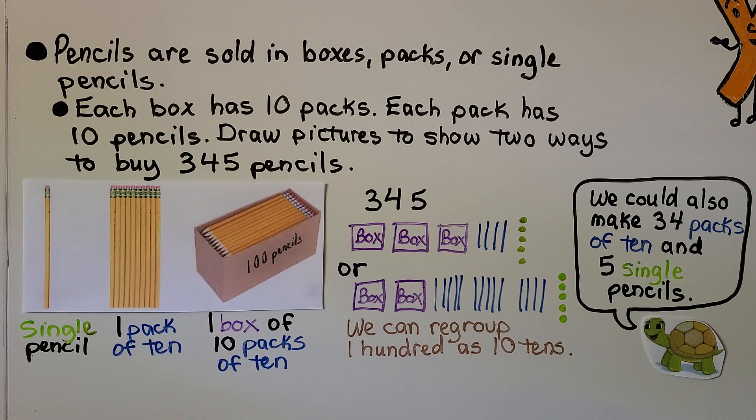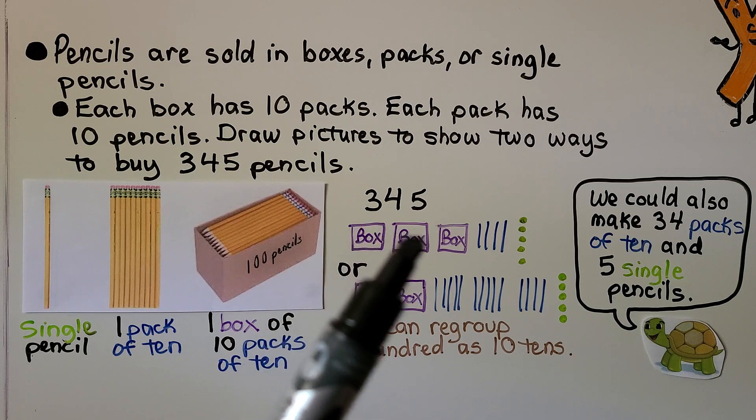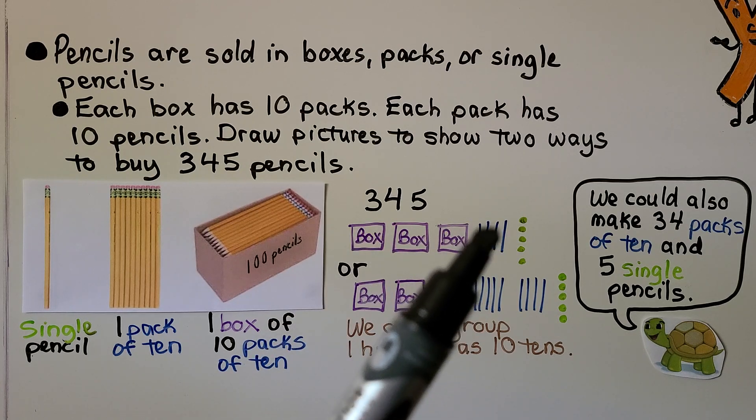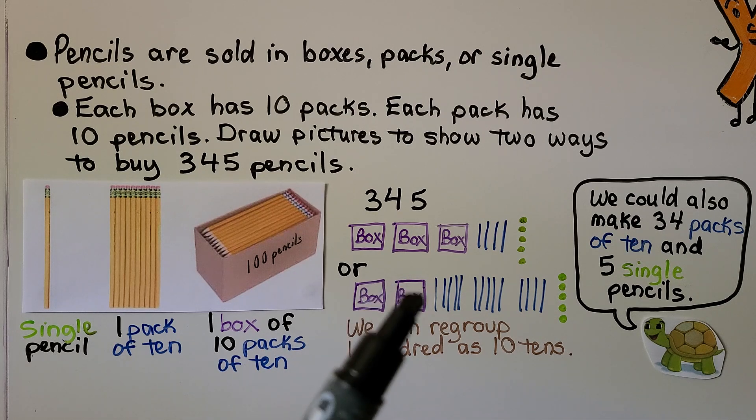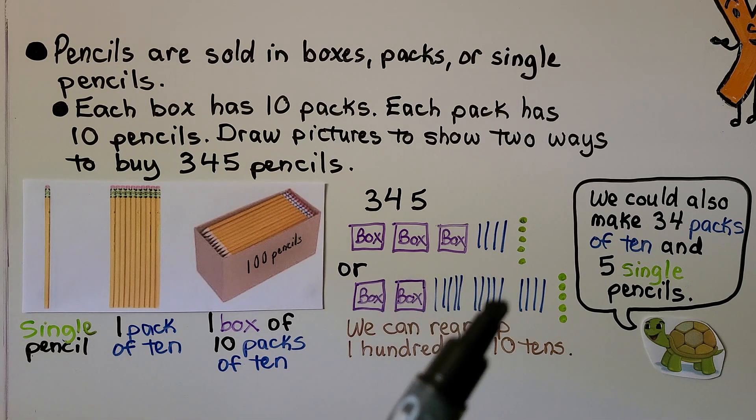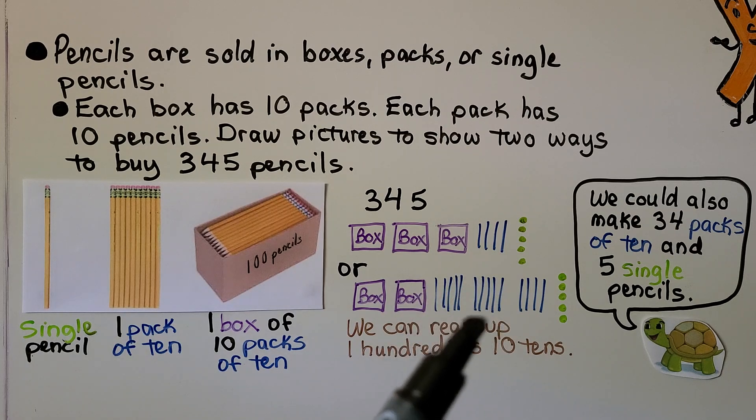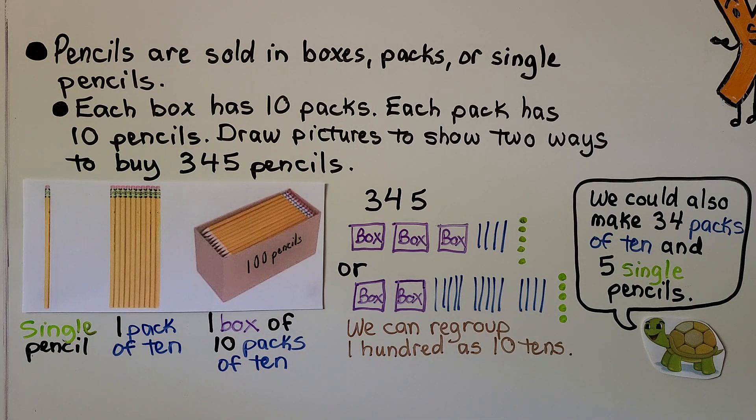And ten tens are one hundred. We can draw three hundred forty-five as three boxes of one hundred, four packs of ten and five single pencils. We can also regroup and do two boxes of one hundred, ten tens, and four tens. So that would be fourteen tens and five ones. We could also make thirty-four packs of ten and five single pencils and have no boxes. There's many different ways we can write three hundred forty-five.